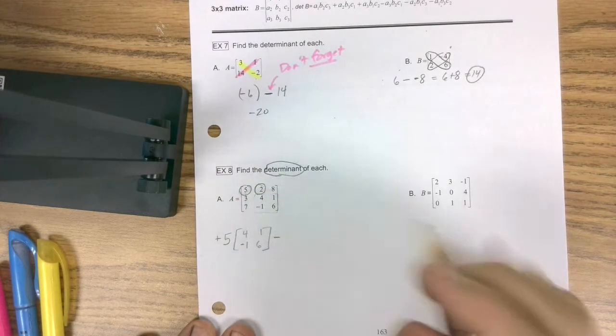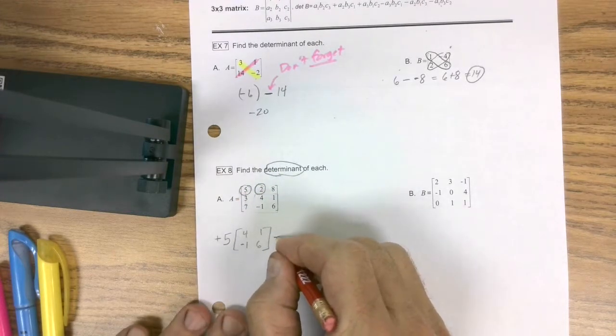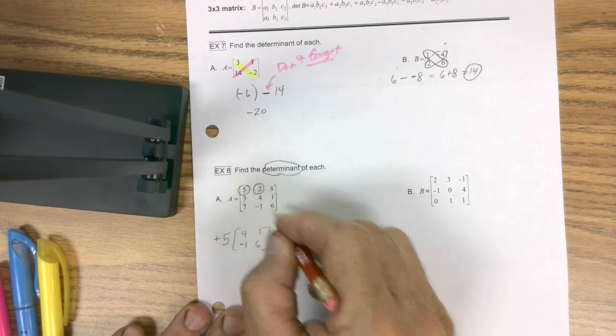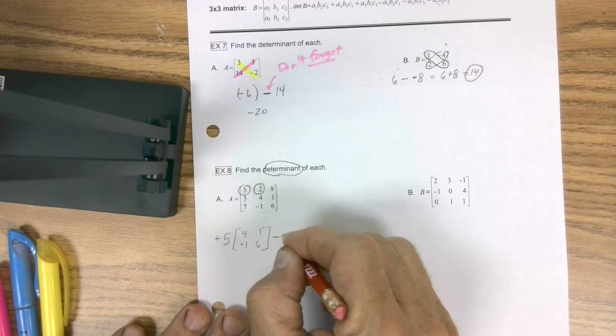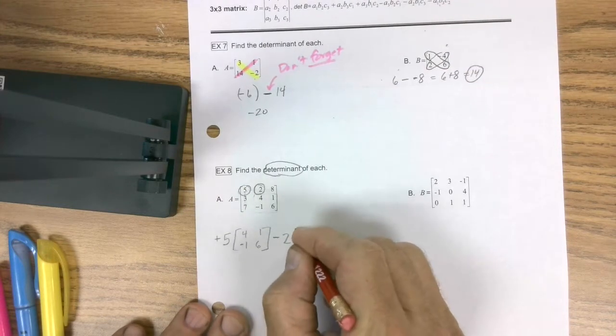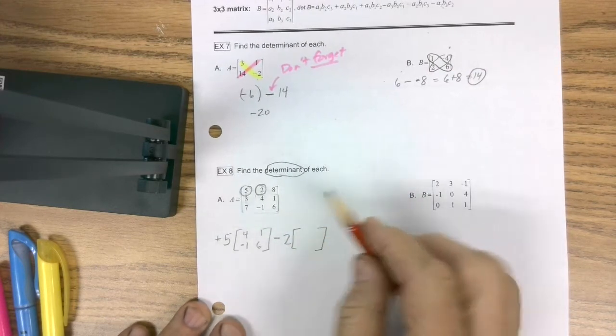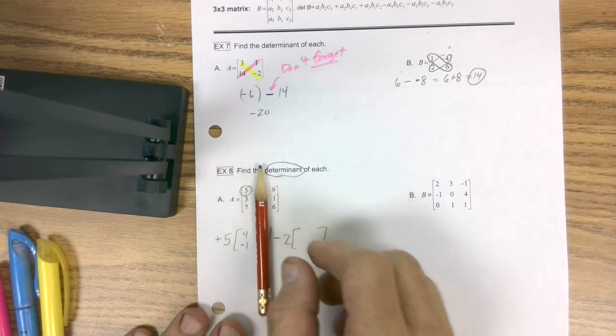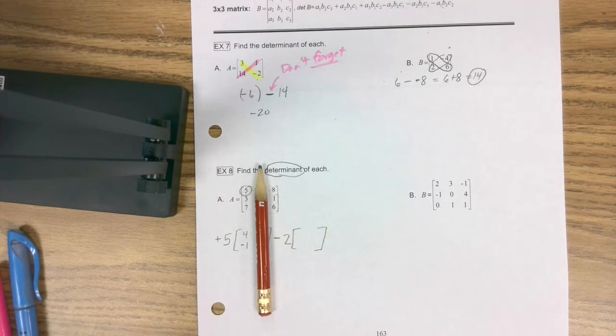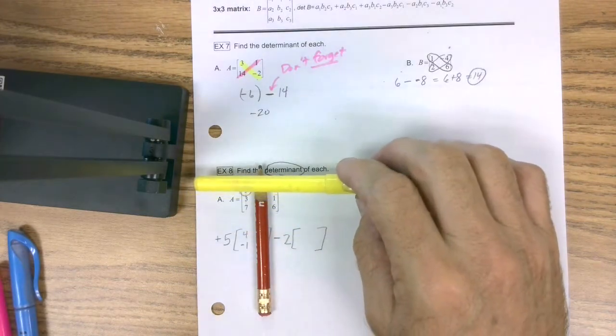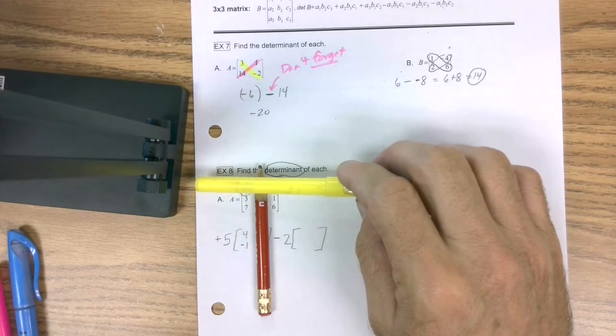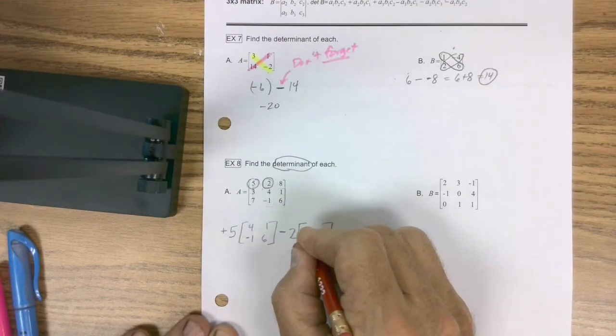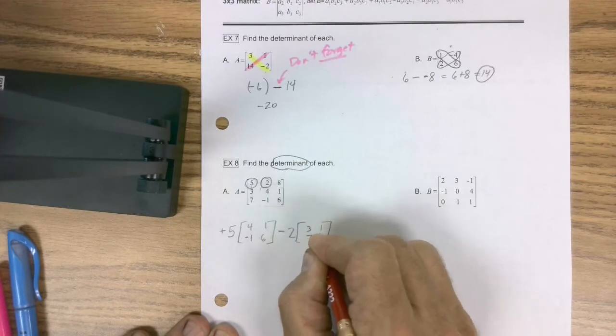And then you peel that number out. Now if that happened to be a negative 2, then that would ultimately result in a plus 2, but it's a positive 2. And now if I take my pencil and cover this and this, and I say, hey, what's the 2x2 matrix? You can see it. It's 3, 1, 7, 6. And that's what's going to go right here. So 3, 1, 7, 6.